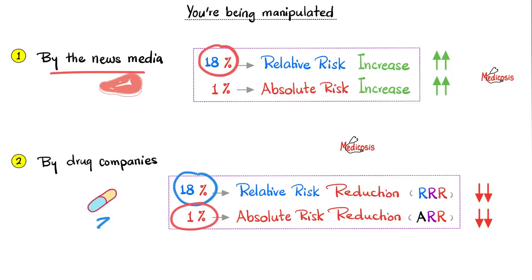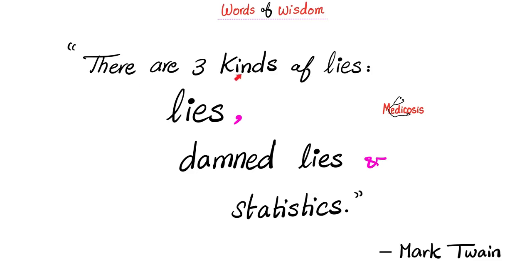But if a company is arguing in litigation that their product did not contribute to a catastrophe, they'll say 'our product only increases the risk by 1%' and label the 18% increase as misinformation. And this is why you should trust nobody. There are three types of lies: lies, damned lies, and goddamn statistics.